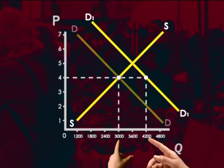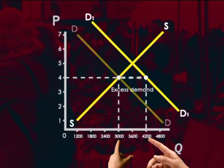But the quantity supplied is still only 3,000 pieces — the supply curve hasn't shifted. Why would it? None of the factors that affect supply have changed. Income, Y, is not part of the supply equation. So the market has shifted out of equilibrium, with households demanding more than is being supplied. The excess demand — the difference between quantity demanded and quantity supplied — is equal to 1,200 pieces. A disequilibrium now exists.